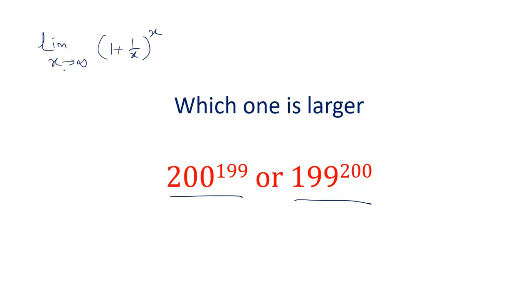That is if the value of x is very very large, the value of this particular expression will be less than e, e is Euler's theorem, Euler's constant.